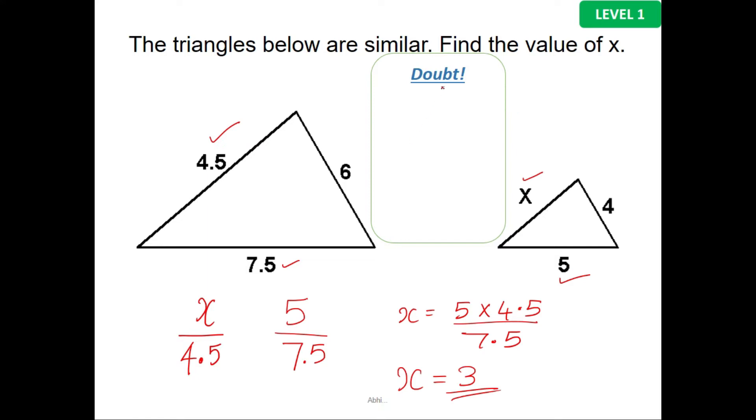Now, reading through your minds, I can see a doubt that you have: can I write x over 4.5 equals 4 over 6? Yes, you can do that. Again, x equals 4 multiplied by 4.5 over 6, giving you 3. So this ratio is also possible. You can take 4 and 6 and find the answer. For both cases, the answer remains the same.